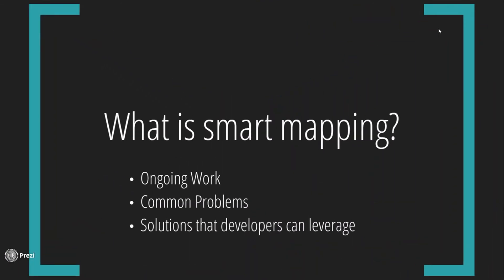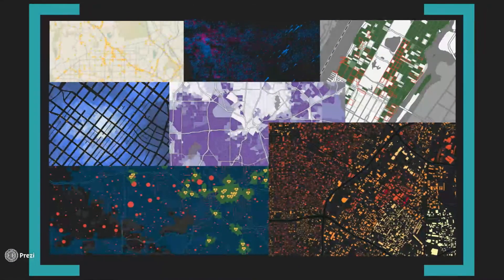The first section is: what is smart mapping? Smart mapping supports your ongoing work. Any problems you're facing with your mapping most likely can be solved visually and statistically with smart mapping. These are solutions that developers can also leverage — it's found in the JavaScript API. What we're going to show today is more the map viewer, the out-of-the-box look at smart mapping, but every smart mapping component we show has a JavaScript element.